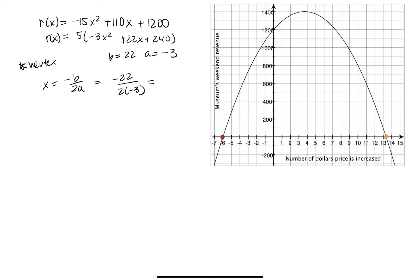And this will simplify to 11 over 3, which is just 3.67. And that jives what we have here as the x value of our vertex.